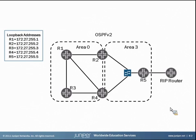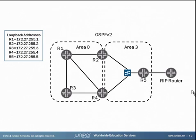Now let's examine the routing topology we have here. There are five different routers in an OSPF domain and a RIP router that is connected to R5. So in this topology, which routers do you think need a router ID? All of them? Just the OSPF routers? How about the routers in area 0? The routers in area 3? Maybe just the RIP router?